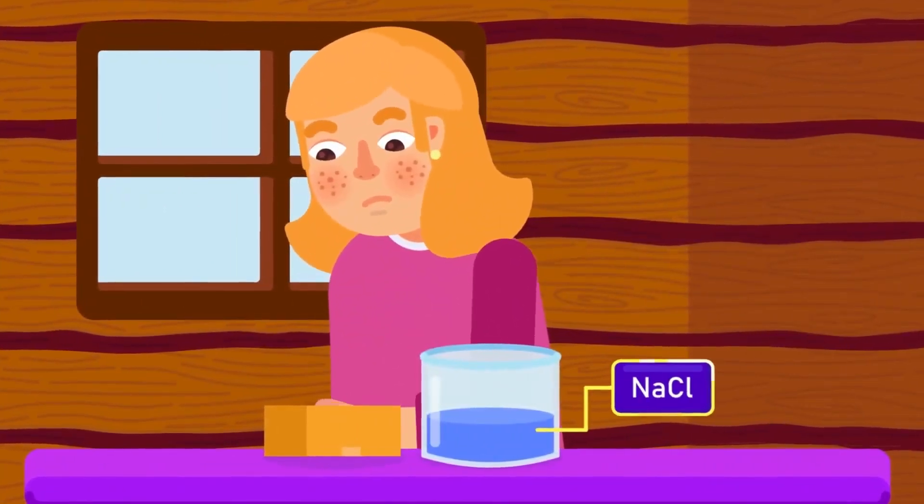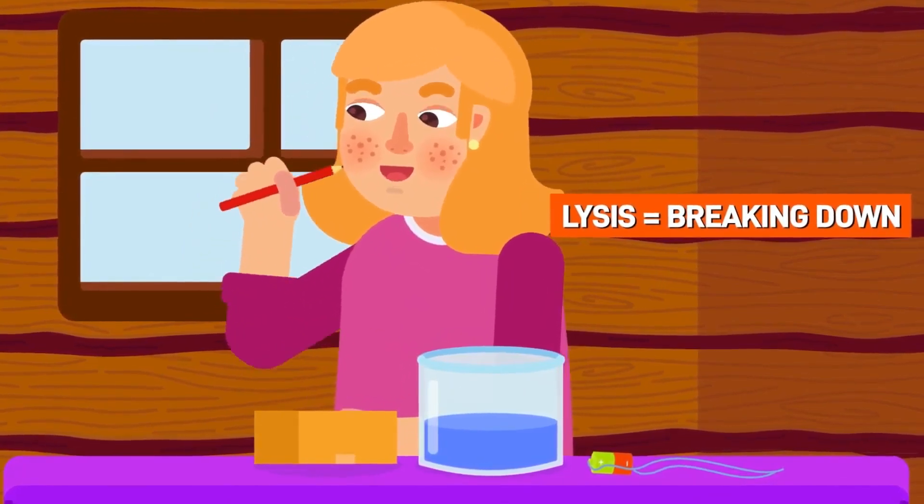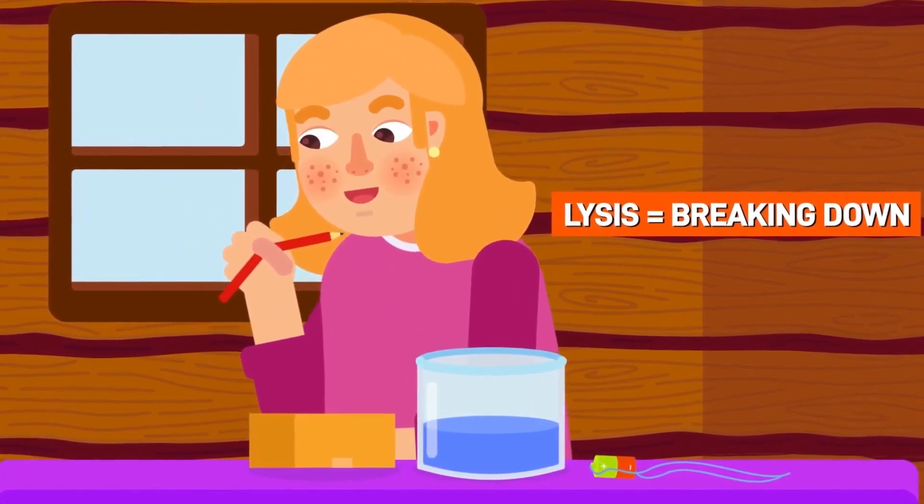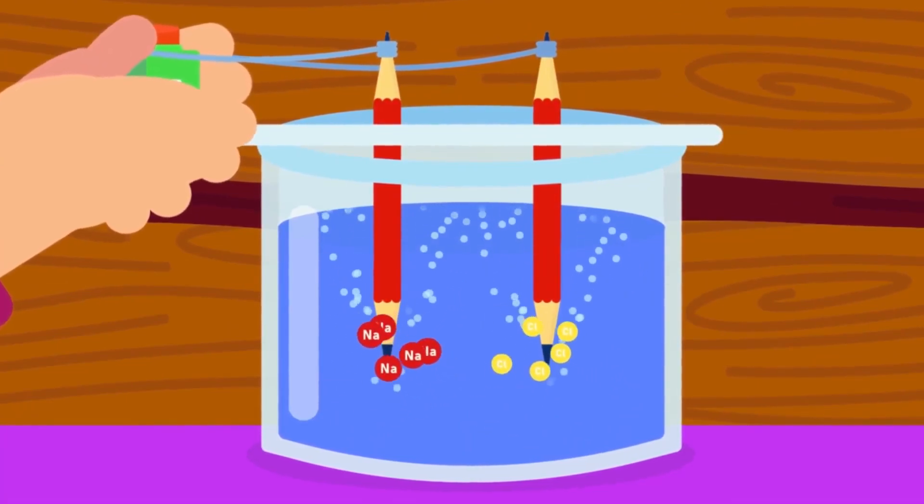Electrolysis is a term made of two words. Electro means electricity. And lysis means breaking down. Therefore, electrolysis is the process in which electricity is used to break down a compound.